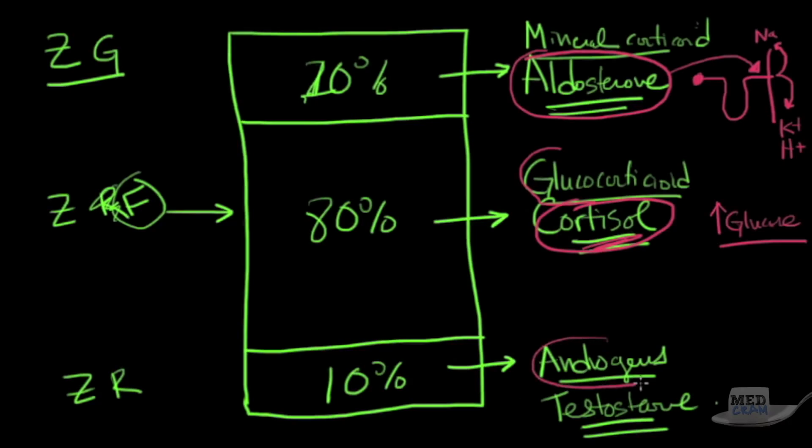Androgens - what do androgens do? It's the male secondary characteristics. It's also responsible for sex drive in women. In fact, women's only source of androgens is from the adrenal cortex.